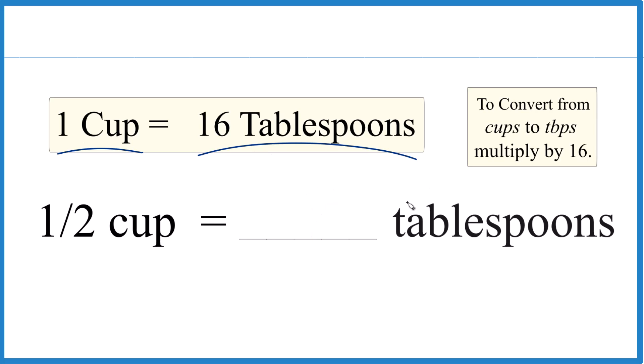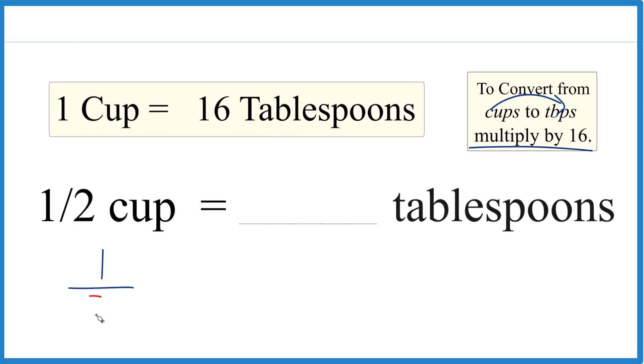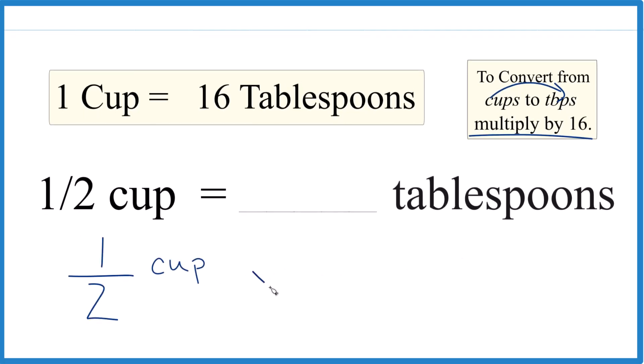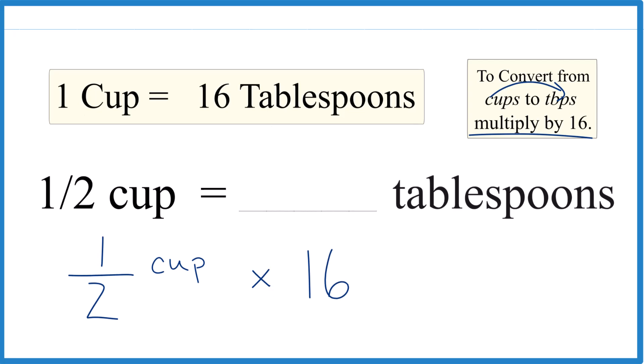The other way you could do this, though, is you could look at it and say cups to tablespoons we multiply by 16. So take one half cup and you multiply that by 16, and that's 16 tablespoons in one cup. So that's our factor there.